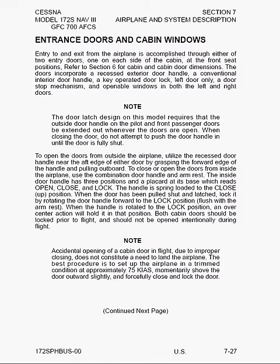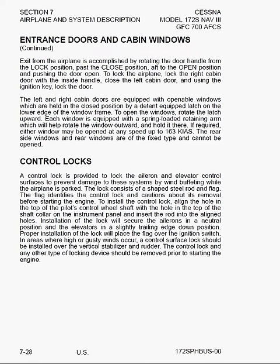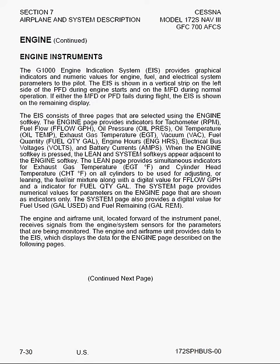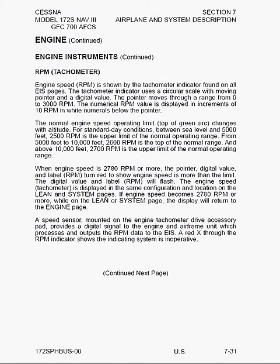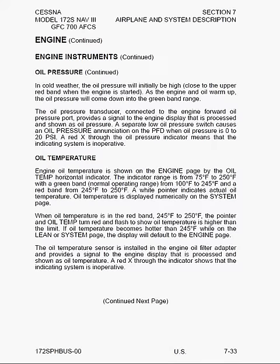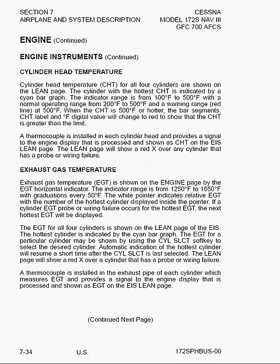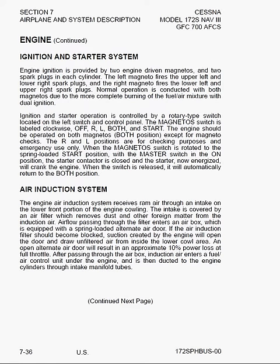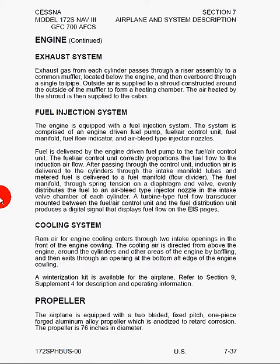Here we've got the control lock, the engine and engine controls, and the engine instruments: the RPM or tachometer, fuel flow, oil pressure, oil temperature, cylinder head temperatures, exhaust gas temperatures, what to do if you have a brand new airplane still breaking in the engine, the engine lubrication system, the ignition and starter system, the air induction system, the exhaust system, the fuel injection system, the cooling system, and the propeller itself.